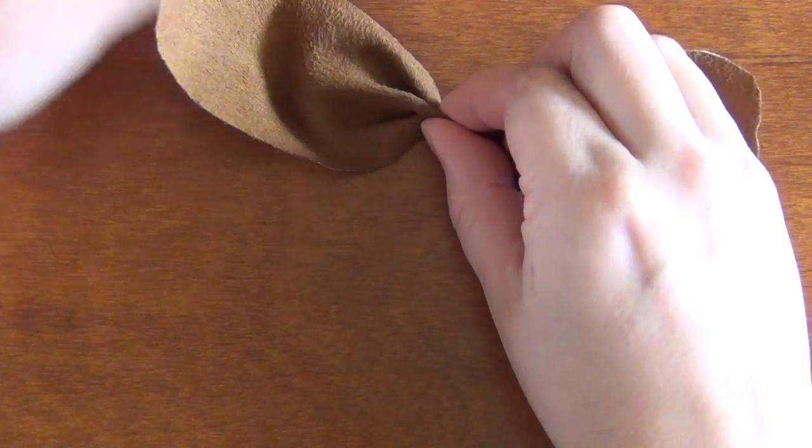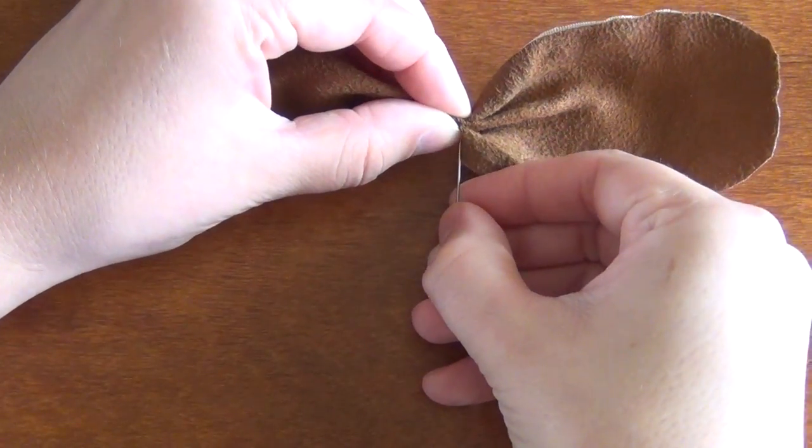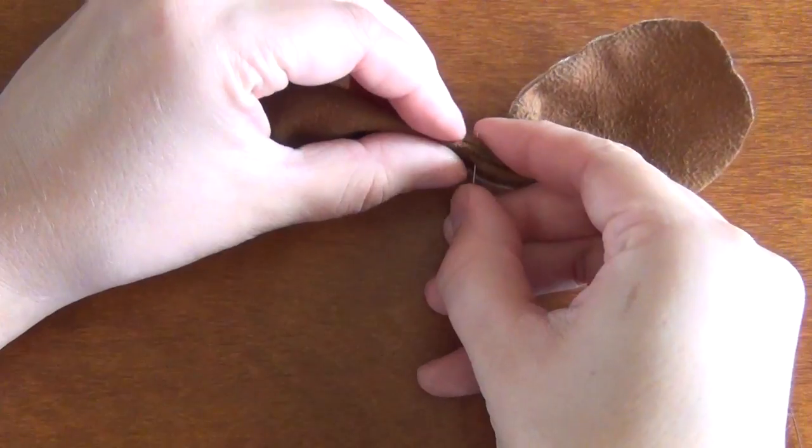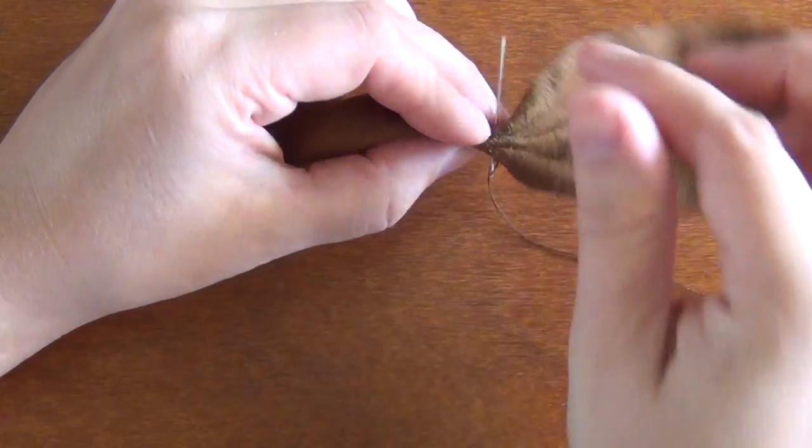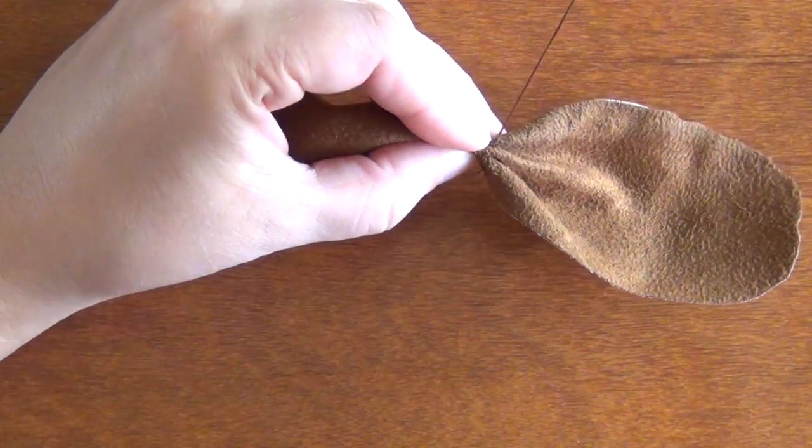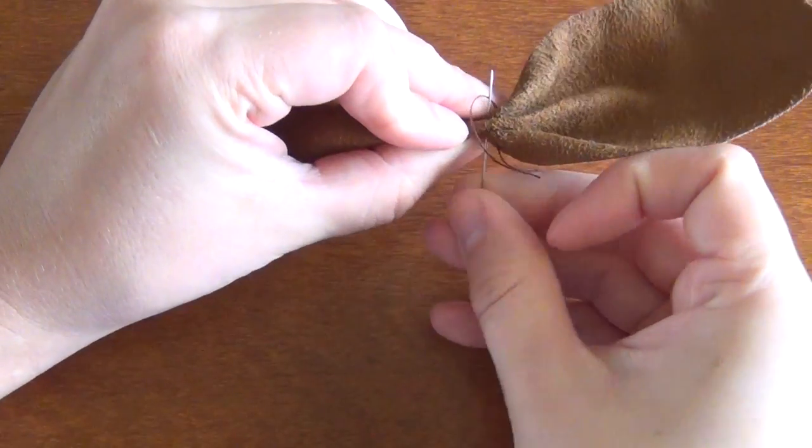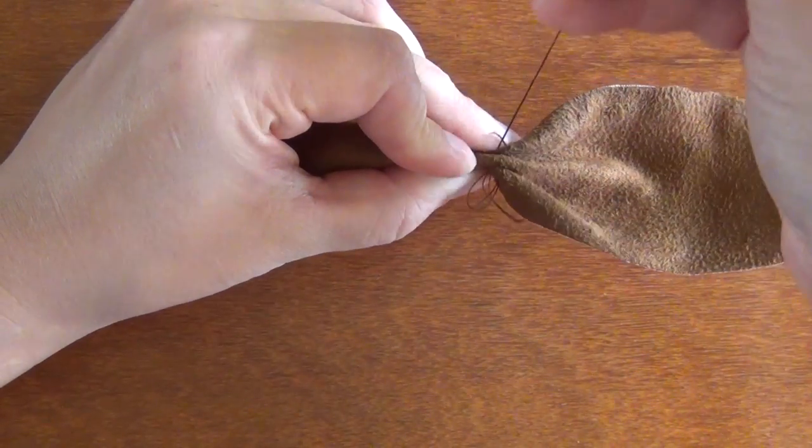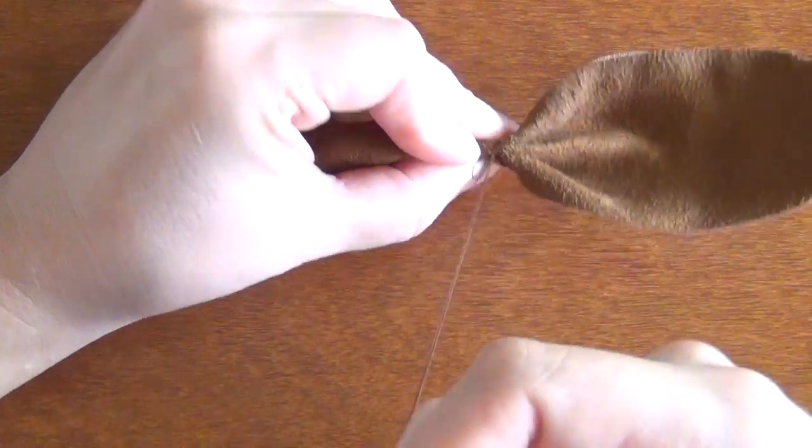I recommend stitching through two or three times first, and then after you've stitched through a couple of times you can just wrap the piece of fabric to hold those folds in place. Once you've wrapped it around several times, turn over the piece of fabric and stitch through a couple times underneath.